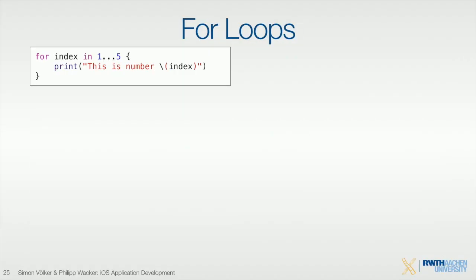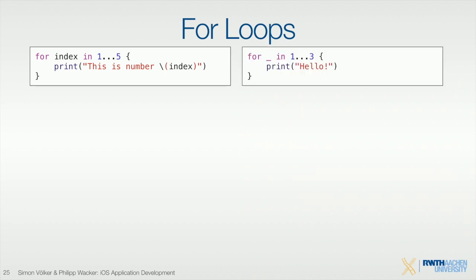For loops — the typical way to define this is using for index in a value range with the dot-dot-dot operator. You can also use an underscore if you don't care about the index and just want the loop to run a certain number of times — for example, just print hello world three times. The compiler will actually give you a hint saying you don't use the index, suggesting you use underscore to save a little memory.